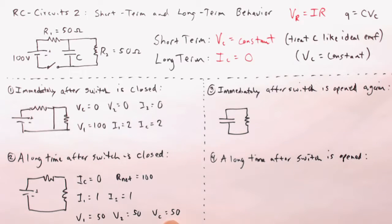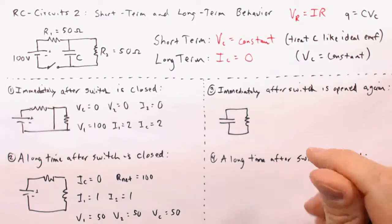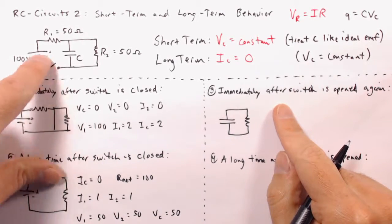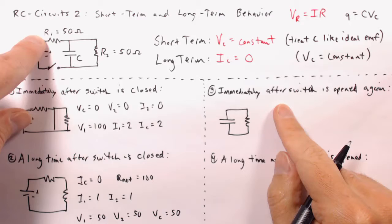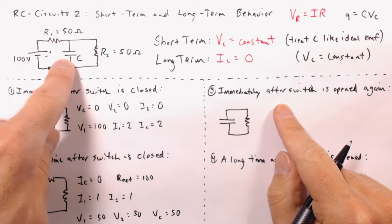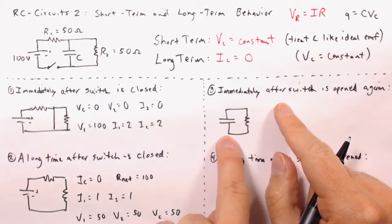So suppose we get this far, and then we open the switch again. Then what? Well, we're looking at case three here. When we open the switch, this whole part of the circuit is out of the loop, and we're left with a single capacitor with a single resistor. Looks like this.